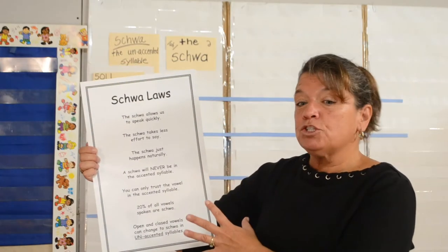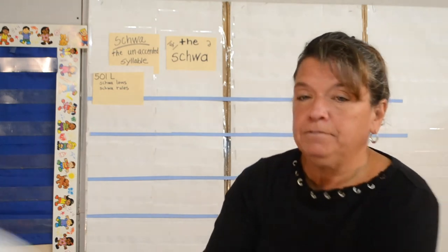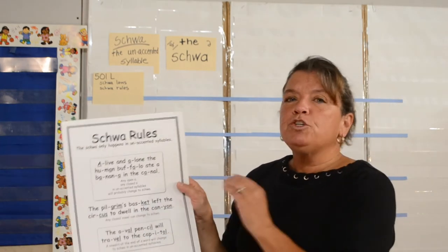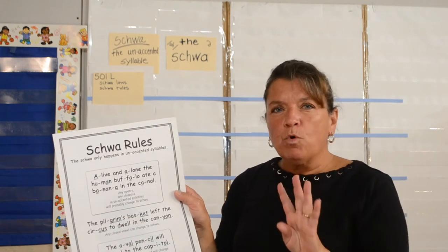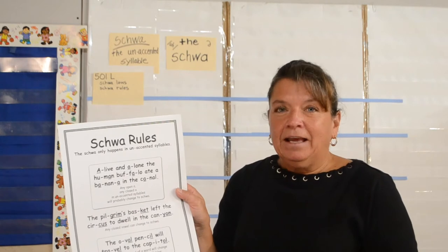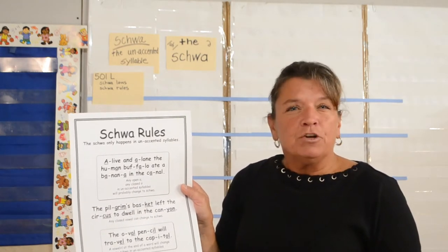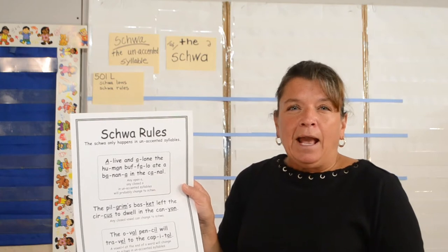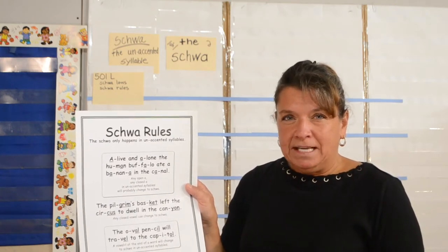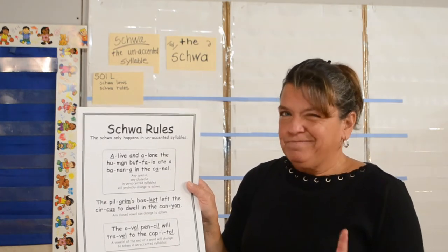So that's the schwa laws. Here I have the schwa rules. With the schwa rules, I've created four sentences. Those four sentences, as silly as they are, help us understand the schwa — looking at the words in the sentences and seeing the silly pictures.